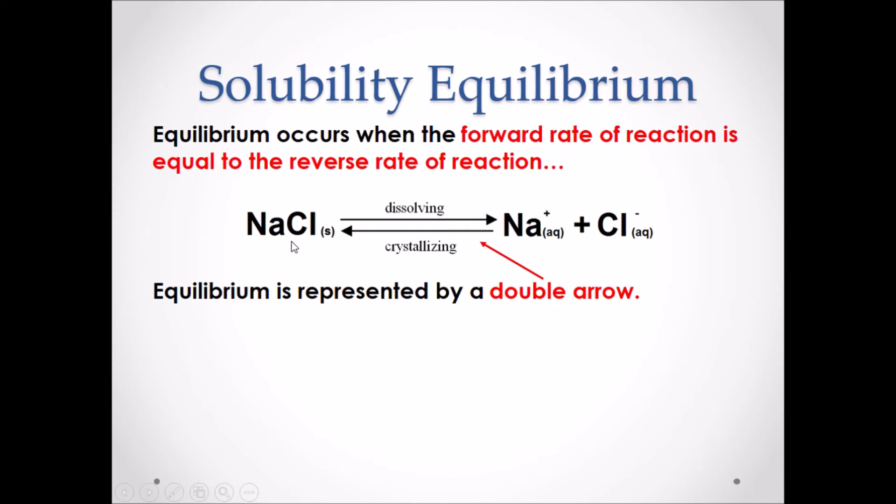On the forward reaction, which goes from left to right, we have the solid NaCl dissolving into its ions. In the reverse reaction, which goes from right to left, we have the ions Na+ and Cl- recrystallizing to form the solid NaCl. Both the forward and reverse reaction are occurring at the exact same time. This is known as an equilibrium reaction.